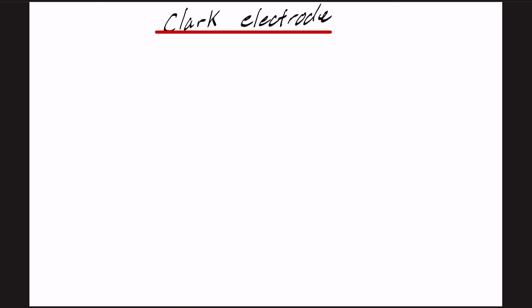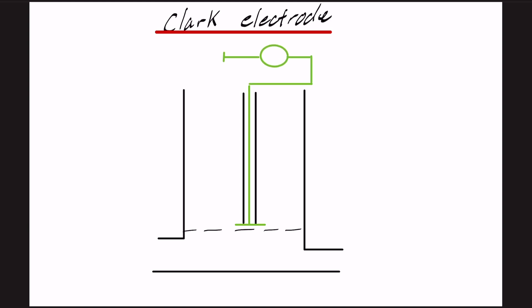So if I were to draw a Clark electrode in a very crude way, essentially it's a cylinder with another cylinder inside, which is insulated. And inside that first cylinder in green, we've got a cathode. In blue, we've got an anode.